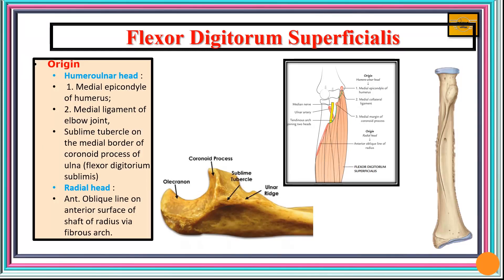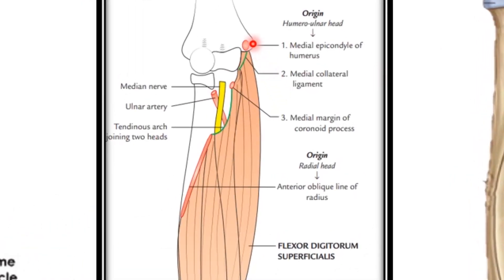Starting with the humeral-ulnar head, we first consider the common point of origin from the medial epicondyle. It also attaches to ligaments around the elbow joint, including the medial ligament. Next, it originates from the ulna at a tubercle on the medial side of the coronoid process called the sublime tubercle. This muscle was formerly called flexor digitorum sublimis because of its origin from this sublime tubercle.